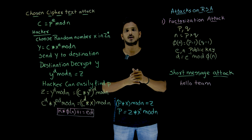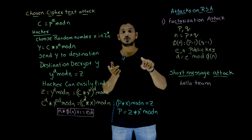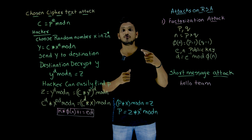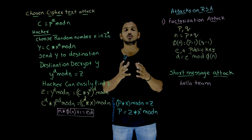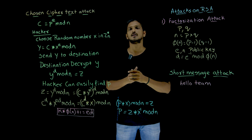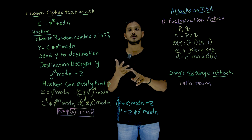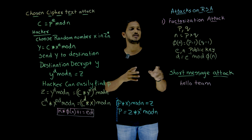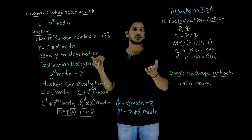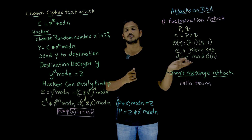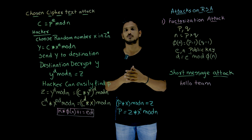If you have the value of Phi of N — because E is public — you can identify D if you have the value of Phi of N. If you want to identify the private key, you need to identify Phi of N based on N, because E and N are publicly available. You know E, you know N. If you identify Phi of N, then you can easily crack the D value, because we have the Euclidean algorithm to identify the multiplicative inverse of a given element, which we covered in previous classes.